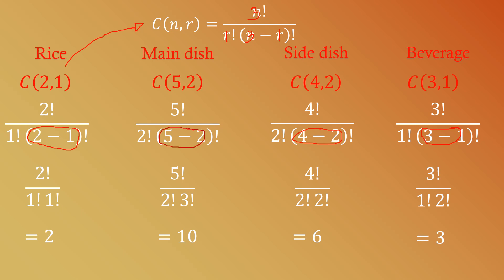This is not yet the final answer. We now apply the Fundamental Counting Principle — multiplying the results from each set: 2 times 10 times 6 times 3. Upon multiplying, the answer is 360. Therefore, there are 360 possible options if we pick one rice from two kinds, two main dishes from five, two side dishes from four, and one beverage from three kinds. This is how the Fundamental Counting Principle works with problems containing multiple sets.